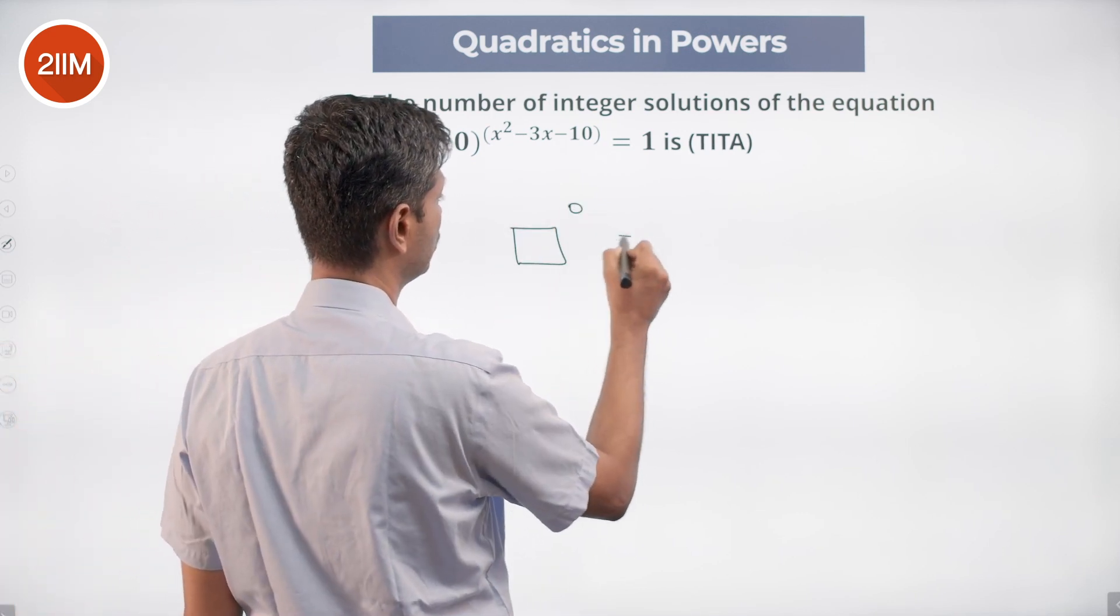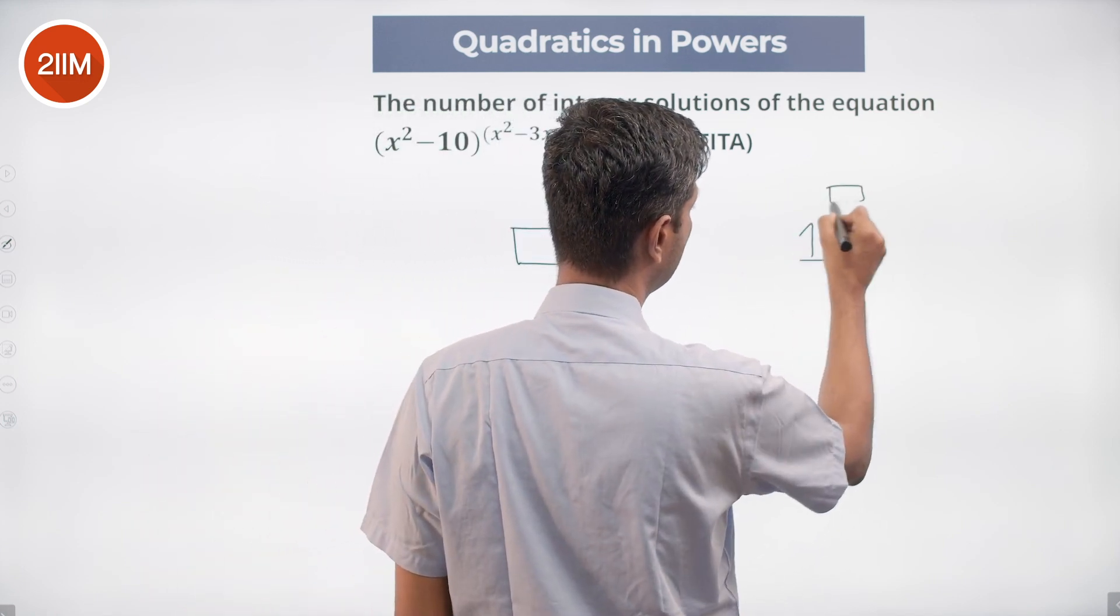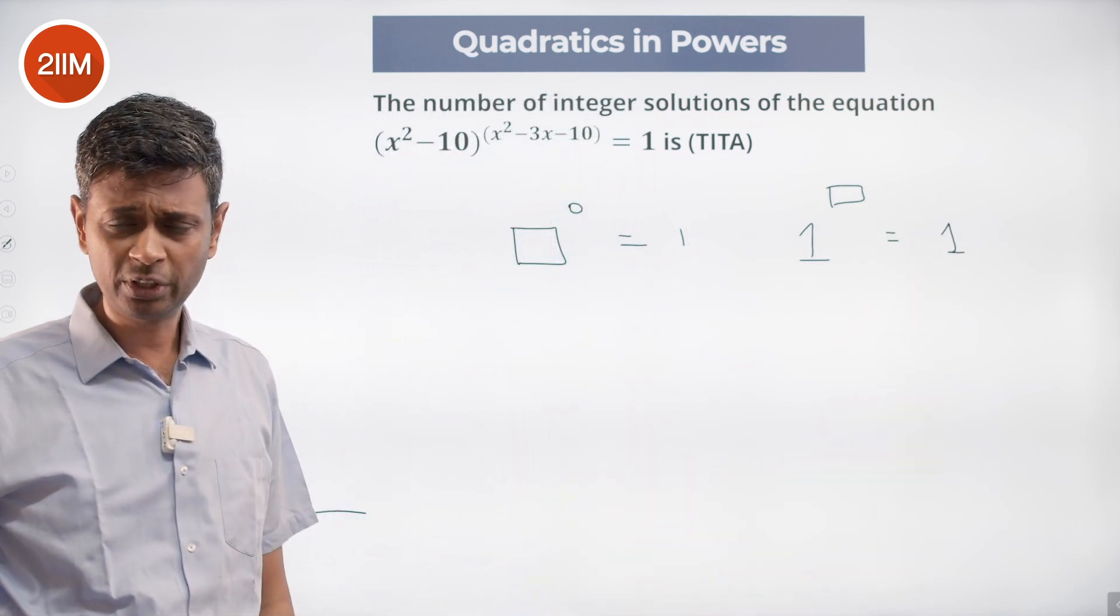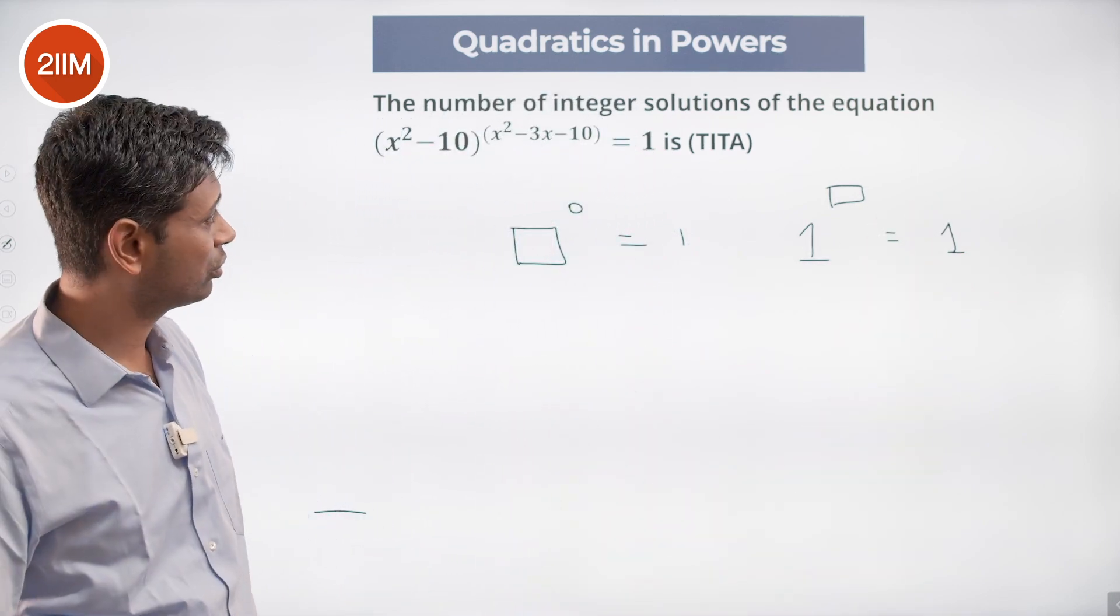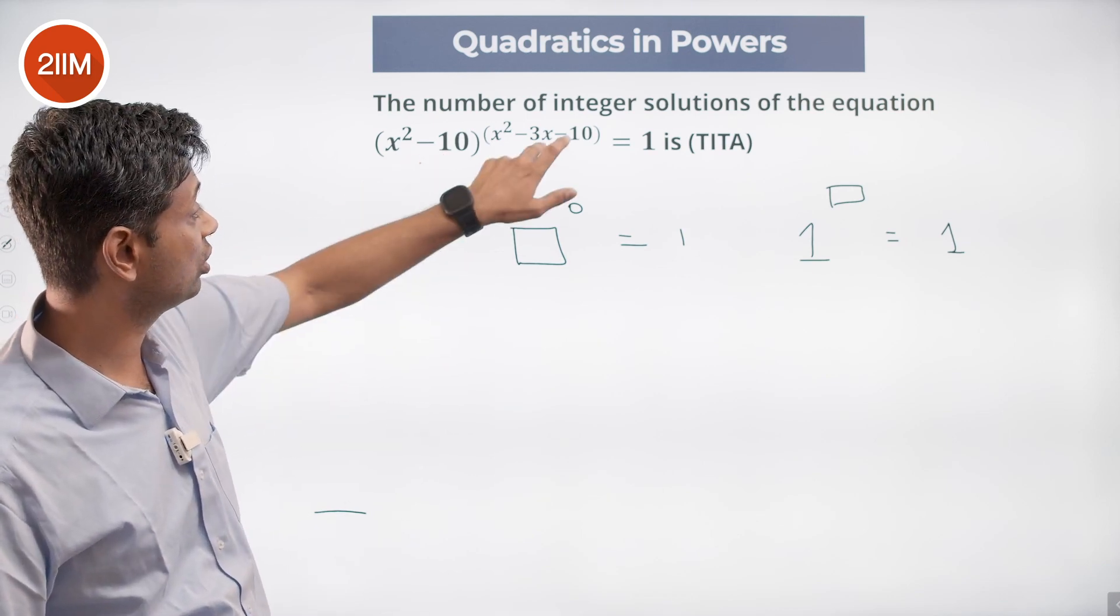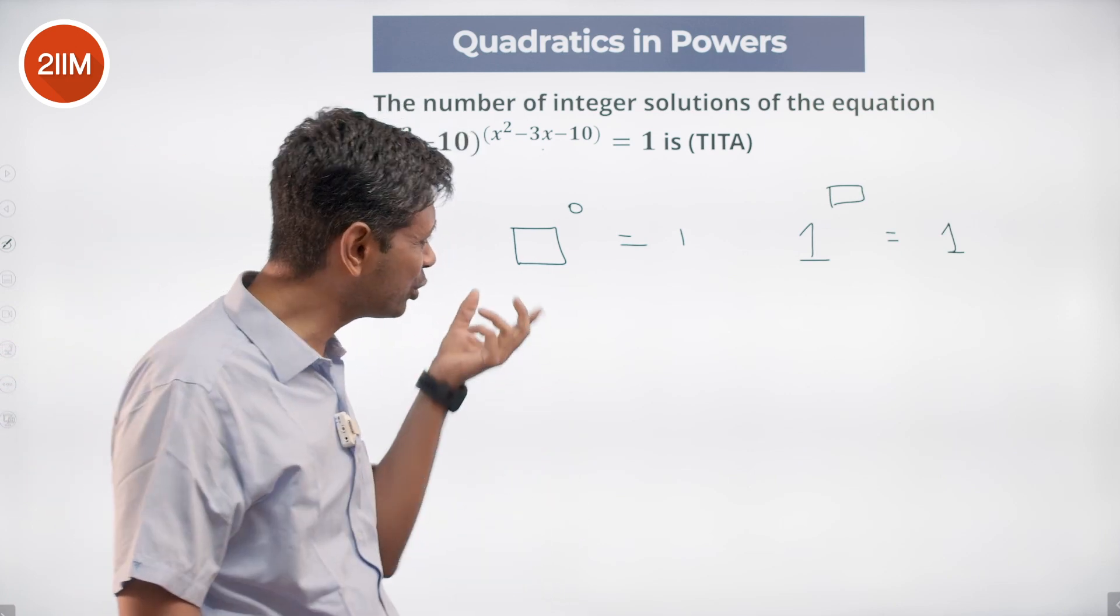something to the power 0 is 1, and 1 to the power of anything is 1. So what do we now need to do? We have to solve for this going to 1 or this going to 0. Get those values, substitute in the other part, and then see if it is logical, whether it makes sense.